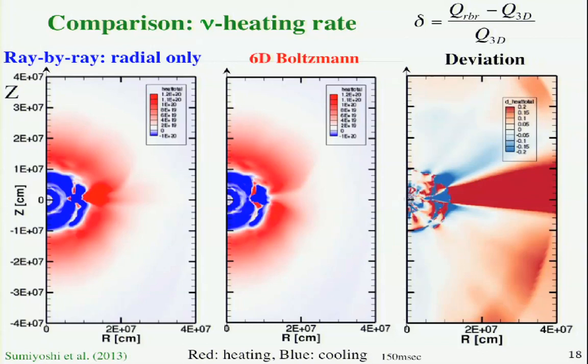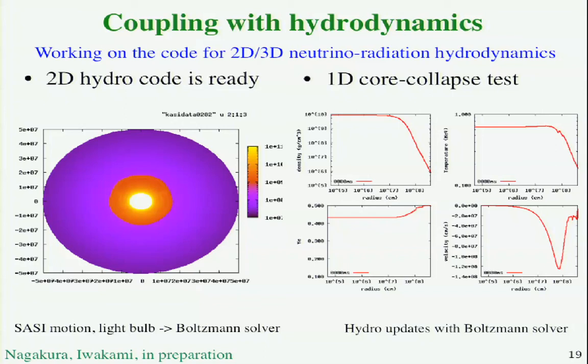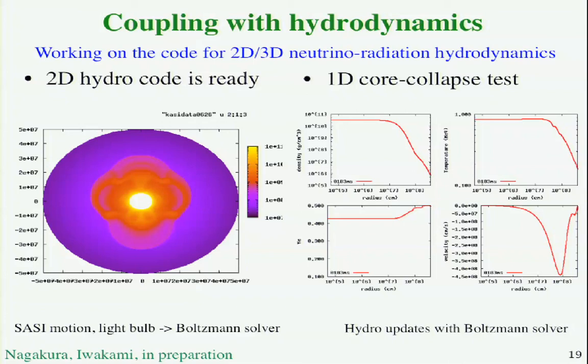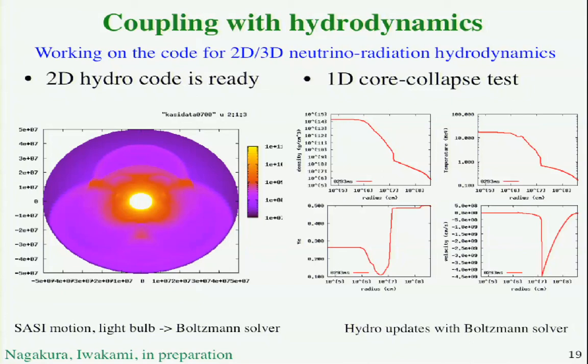While I'm working on neutrino transport, as a post-processing, we are doing the full coupling with hydrodynamics. Still, I'm working on the part of the 2D-3D calculation. This is 2D hydrodynamics, 2D hydrodynamics with spherical motion with ray bulbs. We are switching to the Boltzmann solver. We'll talk about this type of calculation. This is 1D core collapse test done by the hydrodynamics code coupled to our solver for 1D spherical calculation. We have the bounce, bounce, and shock launch. There are some stalls from somewhere around 100 kilometers.